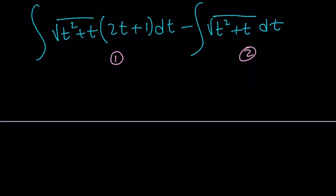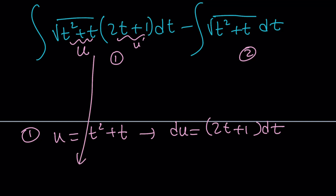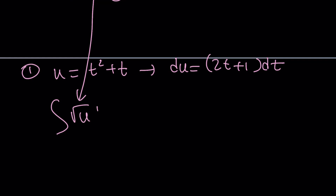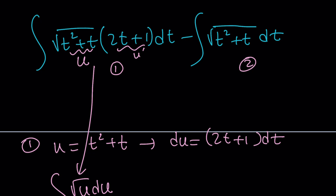The first integral is fairly easy. Let's call u = t² + t. Then du = (2t + 1) dt, which is exactly what I have. So this integral turns into the integral of the square root of u du. Let's handle number one first, then we'll do number two, and subtract them.